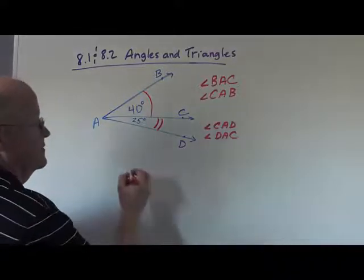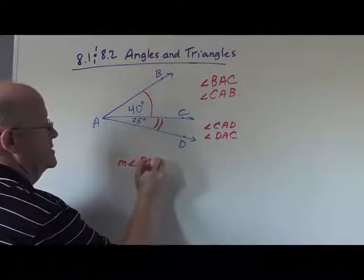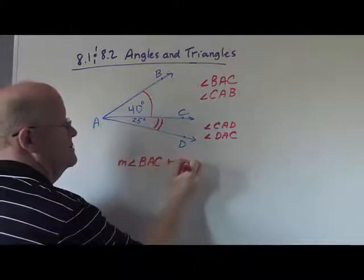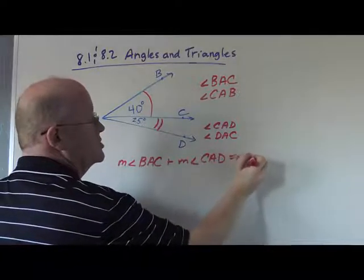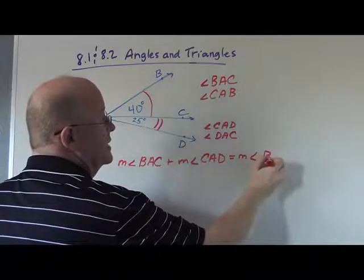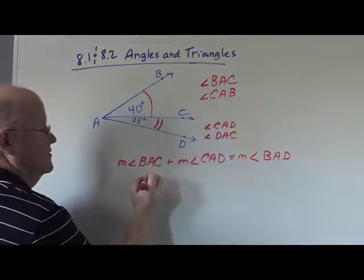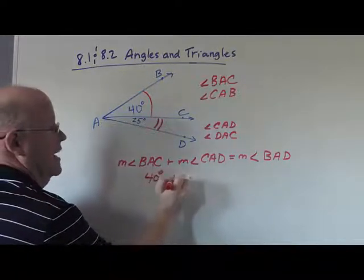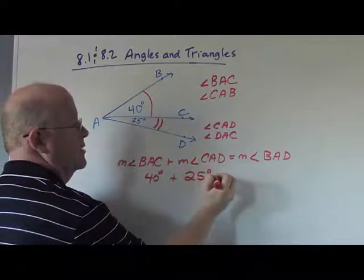Now we can add angle measures together. So if I want to say the measure of angle BAC plus the measure of angle CAD will equal the measure of angle BAD. And the measure of angle BAC was given to be 40 degrees. And then we can add to it the 25 degrees for that lower angle.